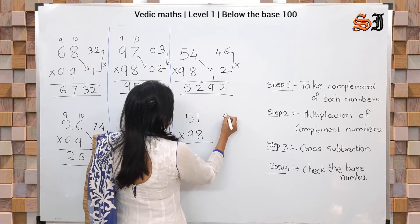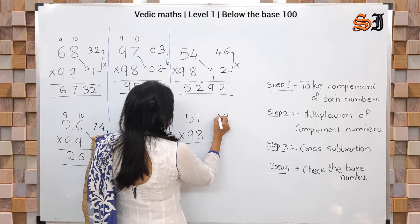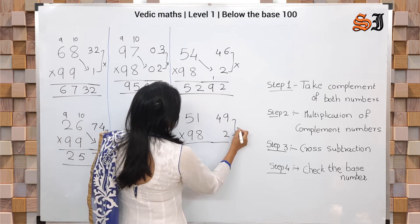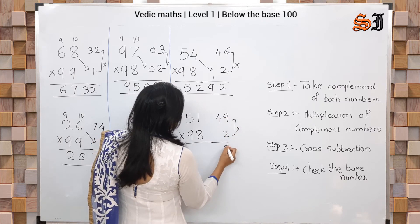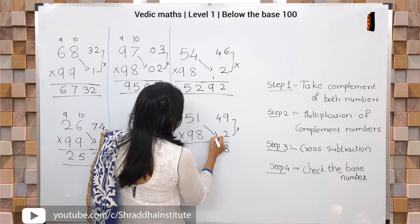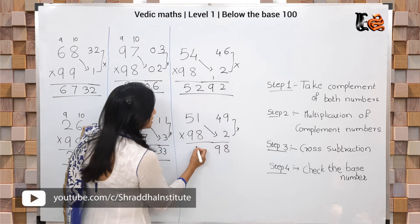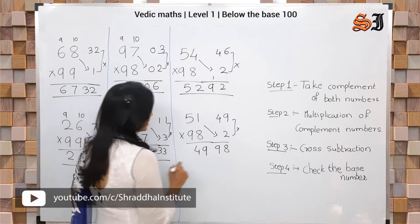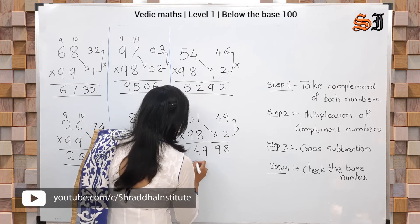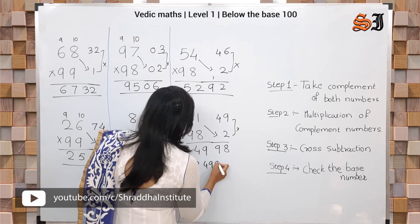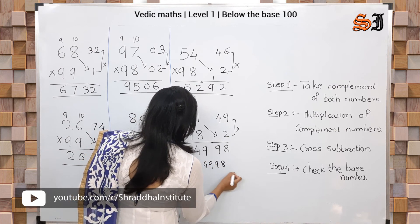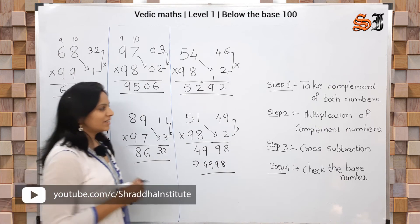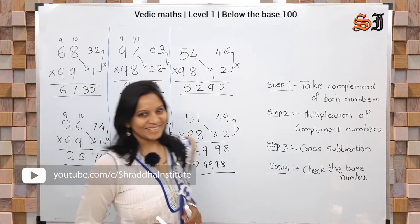Next: 10 minus 1 = 9, 9 minus 5 = 4, here we have 2, and 98. Cross subtract to get 49. So the answer is 4998. Quite easily done!